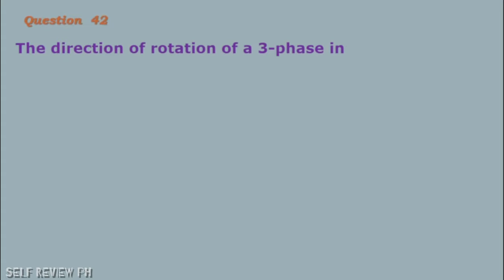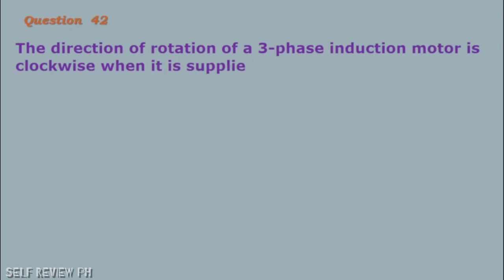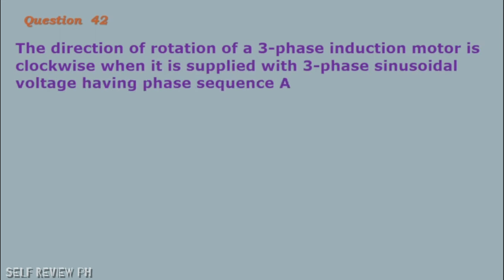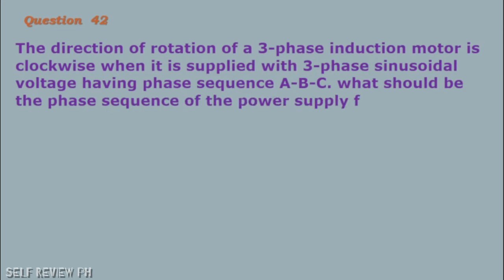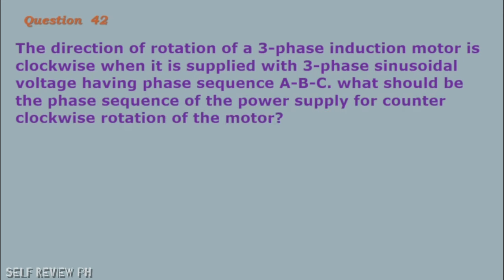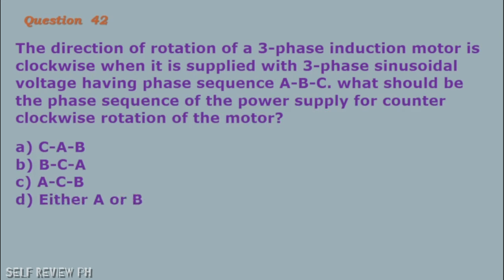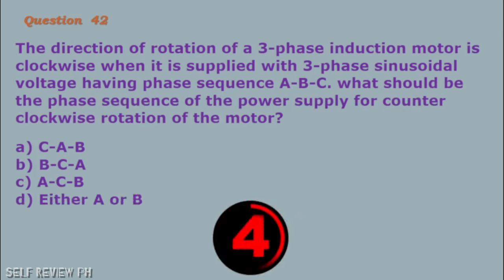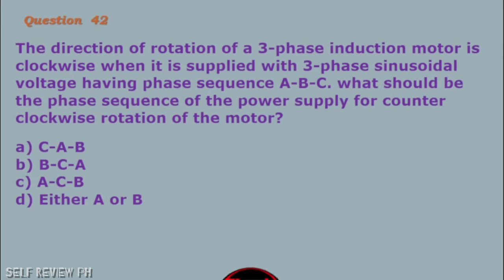Question number 42: The direction of rotation of a three-phase induction motor is clockwise when supplied with three-phase sinusoidal voltage having phase sequence ABC. What should be the phase sequence for counterclockwise rotation? A. CAB B. BCA C. ACB D. Either A or B. The correct answer is letter C, ACB.